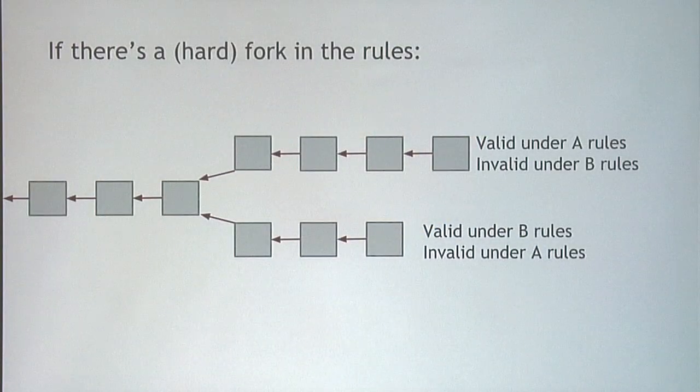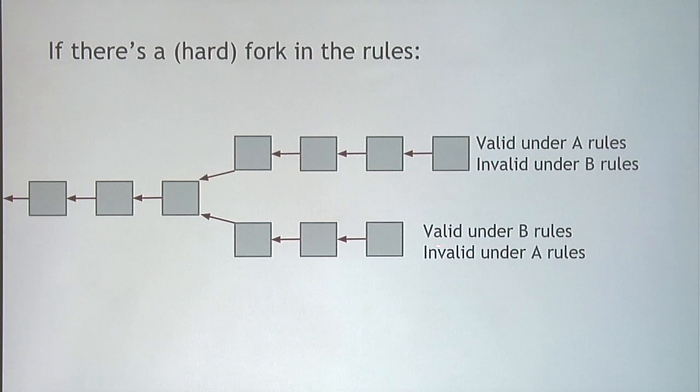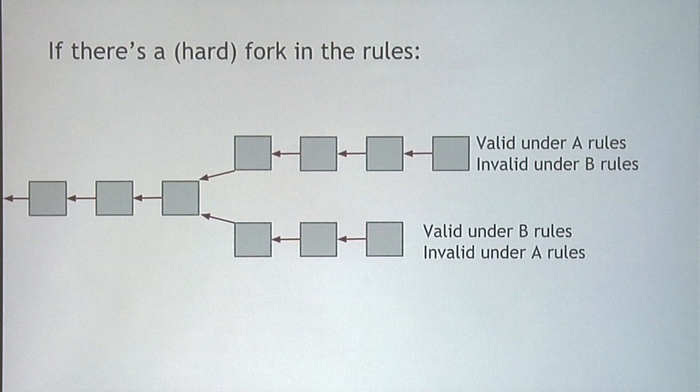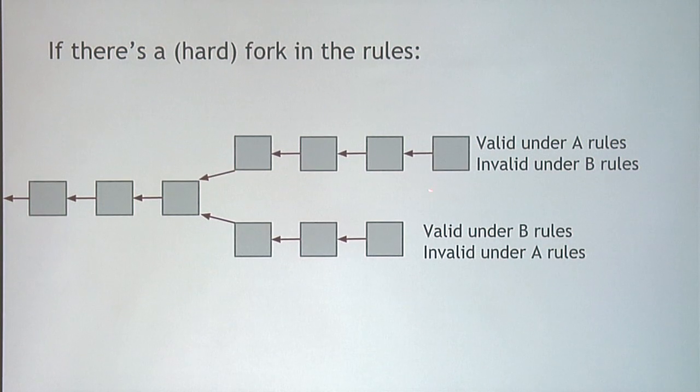Let's look at what happens if there's a hard fork in the rules. Here we have the blockchain building up the history, and at some point there will be a fork in the blockchain if there's a disagreement about the rules. You get two branches: one valid under rule set A but invalid under rule set B, and another valid under rule set B and invalid under rule set A. Once these branches go apart, they can't come back together — this branch is illegal under the B rules, this branch is illegal under the A rules. They're permanently separate.